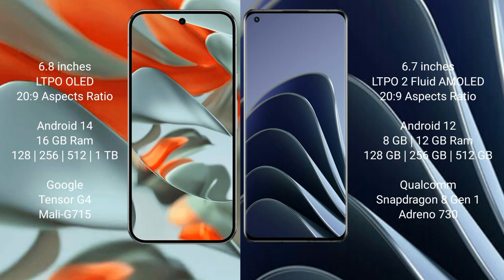Google Pixel 9 Pro XL runs on the Android 14 operating system. OnePlus 10 Pro runs on the Android 12 operating system.